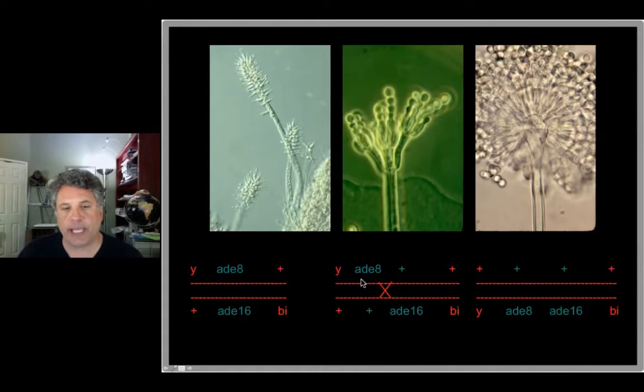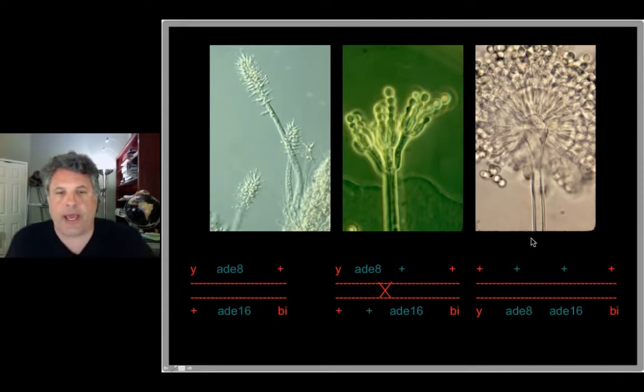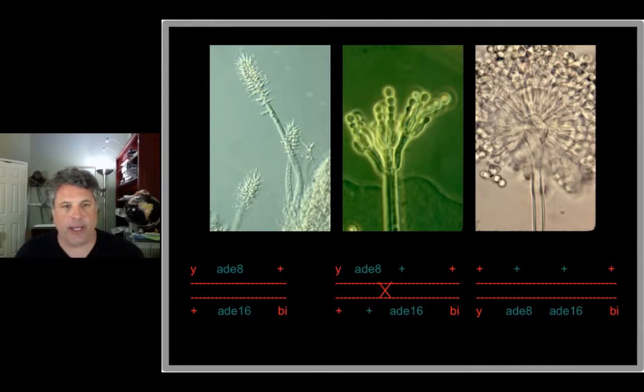Lots of experiments along these lines showed that we could get intragenic recombination, implying that the gene was a linear structure. It wasn't just a single base pair because you would not be able to get recombination if a gene was a single base pair. This led to the notion that indeed the gene was a linear structure and comprised a stretch of nucleotides of the DNA molecule.